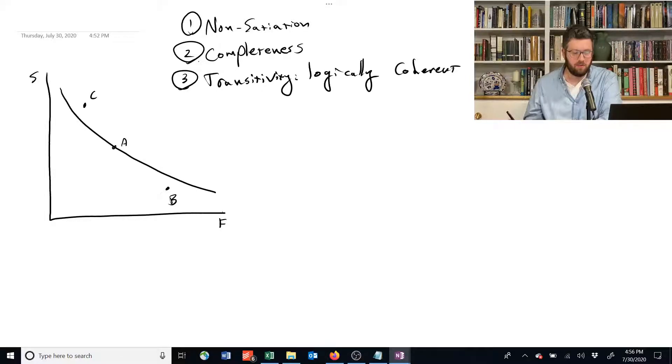But now that we have this indifference curve, we can go a little bit further. For example, at this point on the indifference curve, C prime, C prime is indifferent to A, but C has more of everything. So by non-satiation, C must be better than C prime.